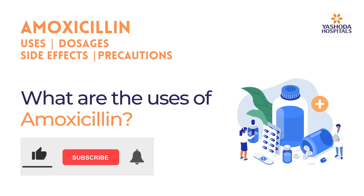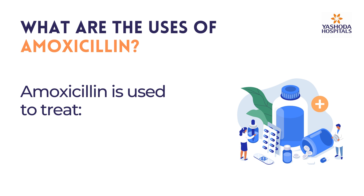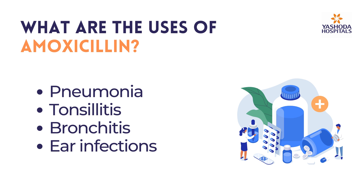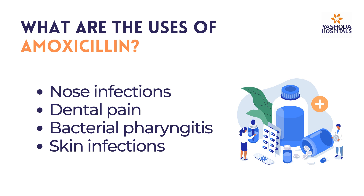What are the uses of amoxicillin? Amoxicillin is used to treat pneumonia, tonsillitis, bronchitis, ear infections, nose infections, dental pain, and bacterial pharyngitis.